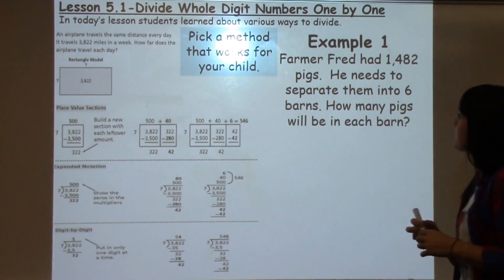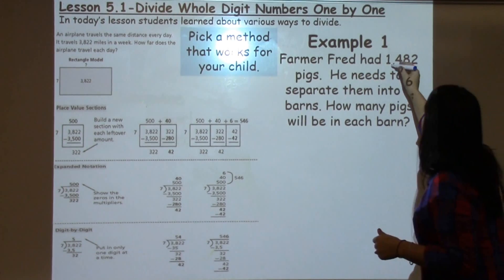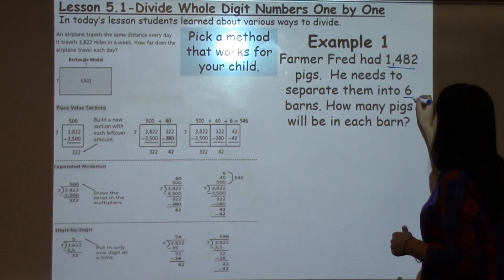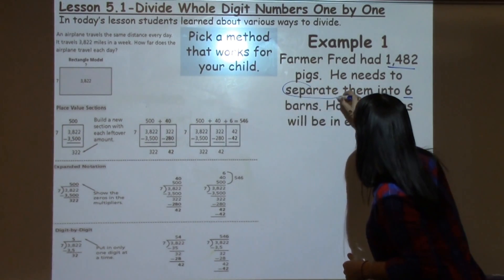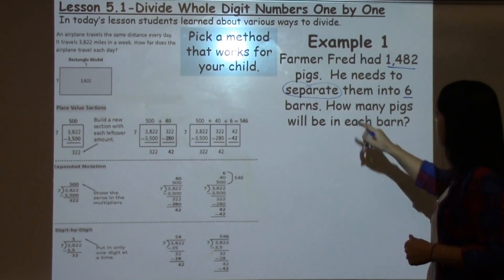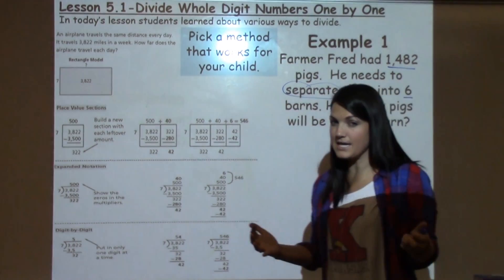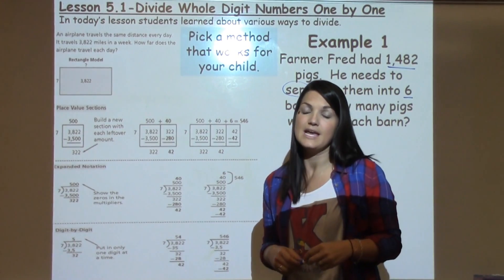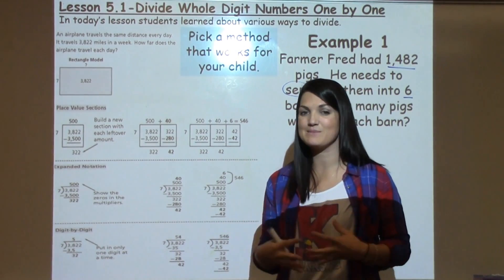So the first example says, Farmer Fred had 1,482 pigs. He needs to separate them into 6 barns. So the word separate, we're really going to focus in on in just a minute. It says how many pigs will be in each barn. So what we really talk to the students about when we're working with word problems is finding those key words that tell you to make it bigger or to make it smaller.